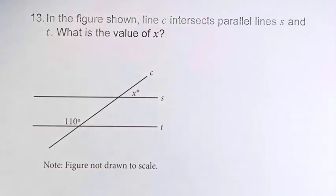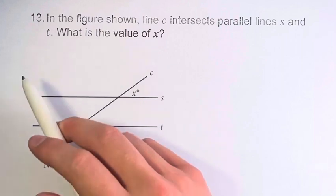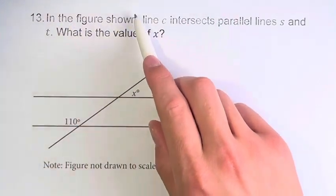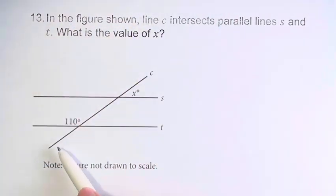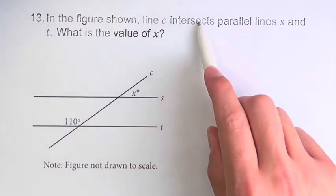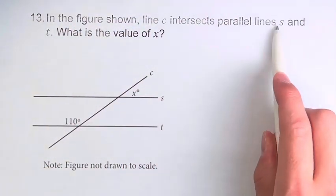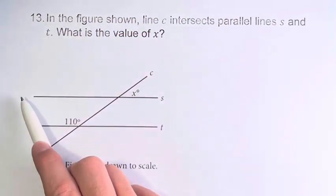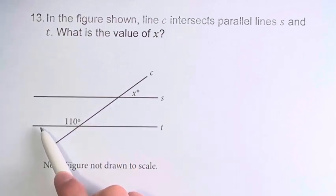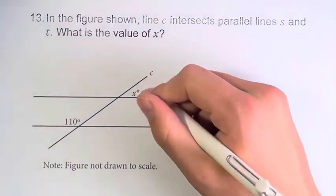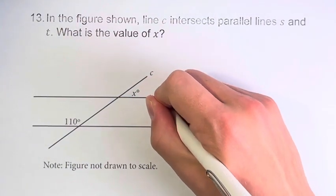Hello, and welcome back to another video. In this problem, we're told that in the figure shown, line C intersects parallel lines S and T. So we have two parallel lines right here. Let's just denote that.